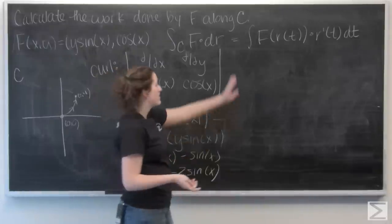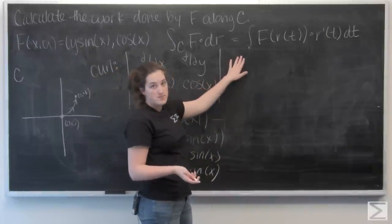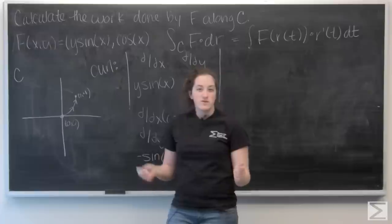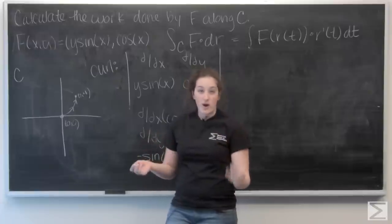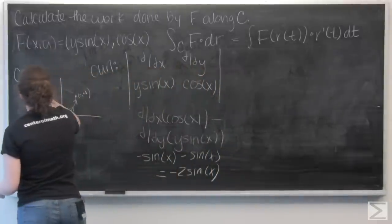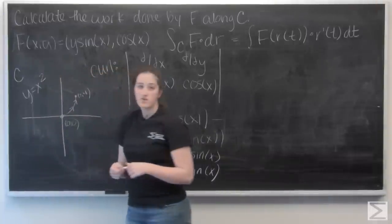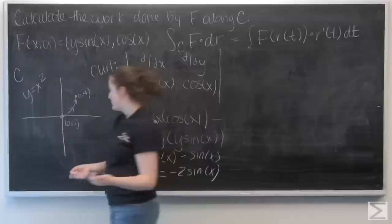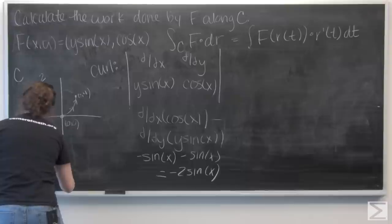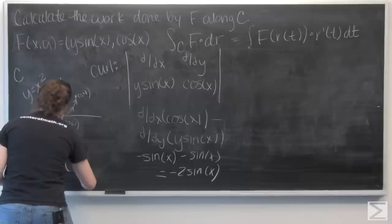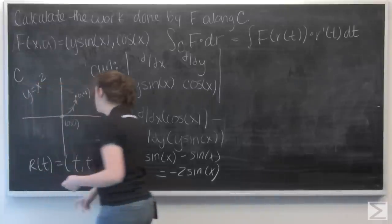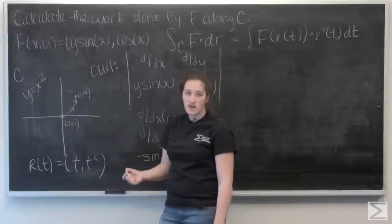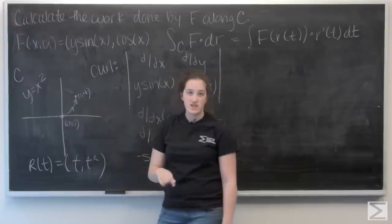Since the curl is not identically 0, f is not conservative, and I'm going to have to go through the whole line integral process. So let's parametrize this curve. We know it follows the graph of y equals x squared, so the easiest way is to set t equal to x. Then my parametrization r(t) is given by (t, t²), and I take bounds from t equals 0 to t equals 2.